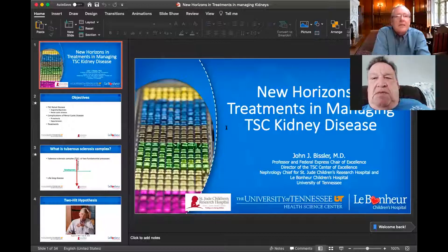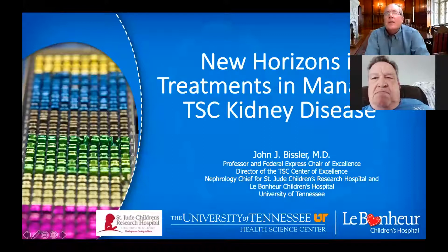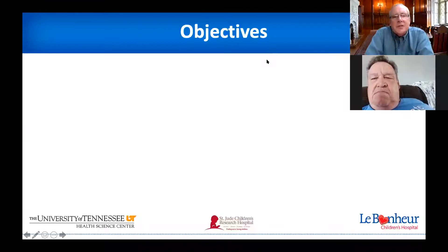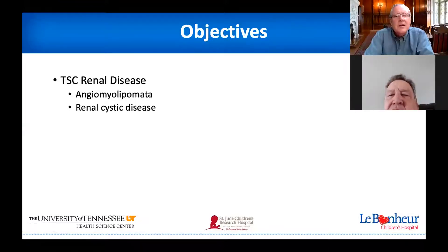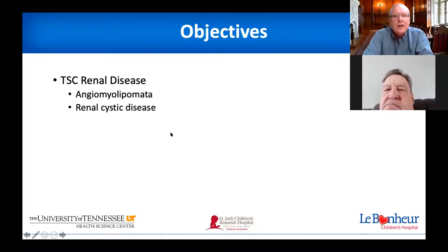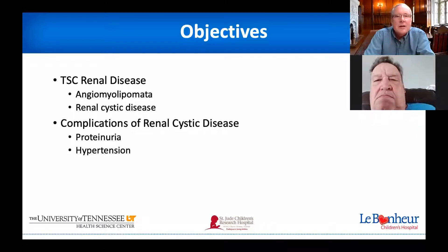Thank you so very much, Julie, and to the TS Alliance and Lamb Foundation for asking me to speak. I will share my screen and we will get started. I have several objectives today. First, I will define and help you understand TSC renal disease — both the angiomyolipoma and renal cystic disease — and I'll address some of the very low incidence of malignancy in the context of cystic disease. We'll also talk about the complications of renal cystic disease, which is a topic we haven't discussed much in American populations, and then I'll tell you about new horizons in treatments.